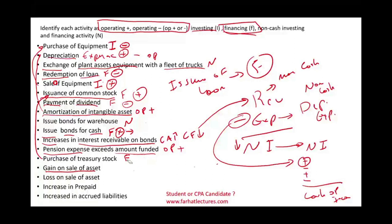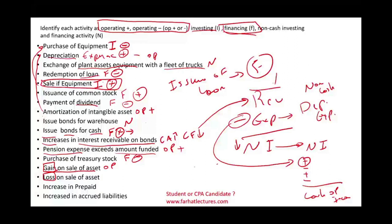Gain on sale of asset: you sold an asset and had a gain. Selling the asset itself is investing. The gain goes under operating because gains go on the income statement. The gain increases your net income without increasing cash, so we deduct the gain. The loss is the same — it goes on the operating section — and since the loss reduced net income without reducing cash, we add it back. The loss is just an accounting figure: the difference between what you received in proceeds and your book value.